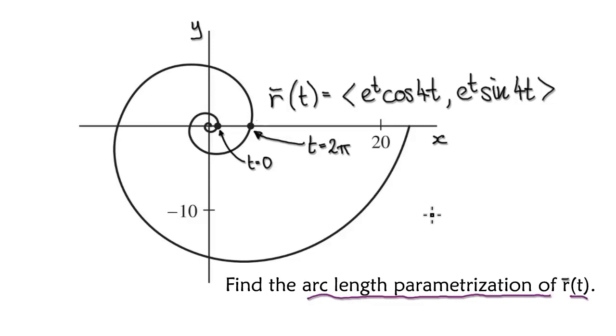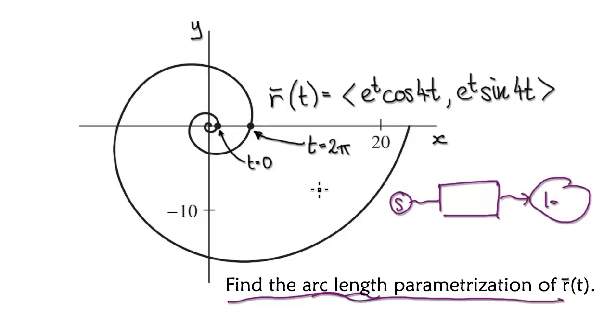So what that means is your job is to come up with a machine where you input the arc length s, and it will tell you the location. Let's say you give a distance of 8, and let's say 8 is here. So when you feed 8 into the machine, it will spit out the location, it will spit out this vector here.